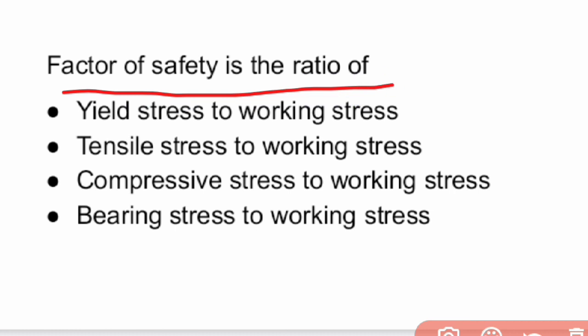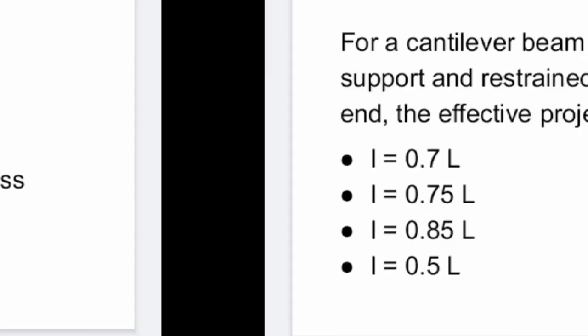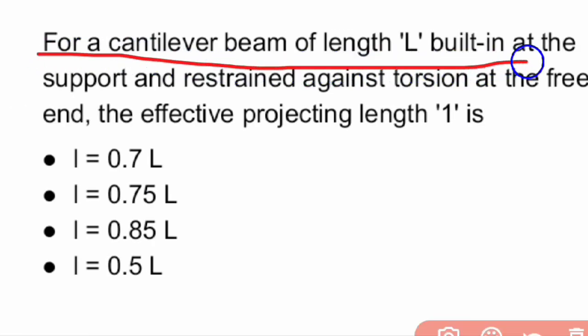What is the factor of safety formula? The factor of safety is the ratio of yield stress to working stress.